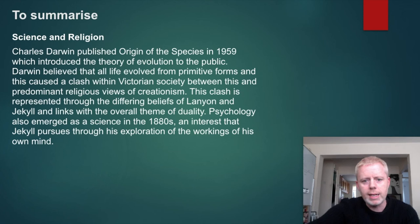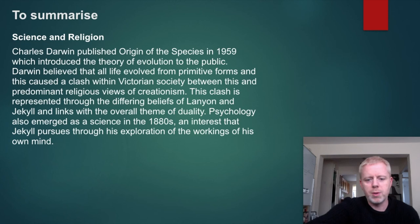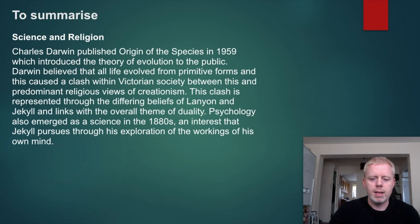To summarise: Charles Darwin published On the Origin of Species in 1859, introducing the theory of evolution to the public. Darwin believed all life evolved from primitive forms, causing a clash within Victorian society between this and the predominant religious view of creationism. This clash is represented through the differing beliefs of Lanyon and Jekyll and links with the overall theme of duality. Psychology also emerged as a science in the 1880s, an interest that Jekyll pursues through his exploration of his own mind.